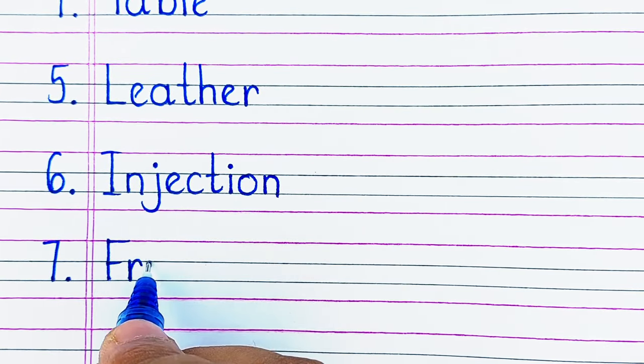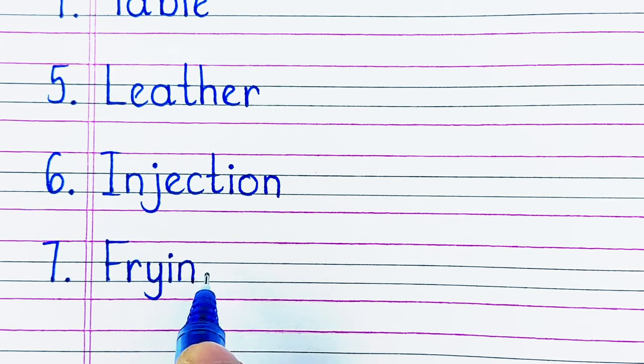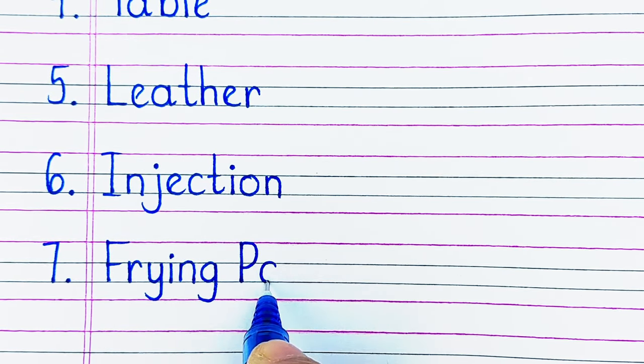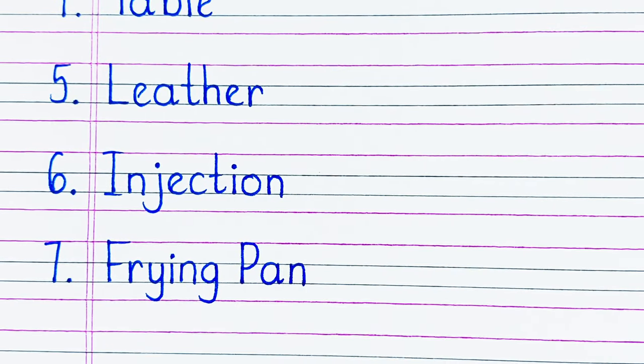On number 7, we have a cooking utensil on which we fry something, i.e. a frying pan. Frying pan is spelled as F-R-Y-I-N-G P-A-N.